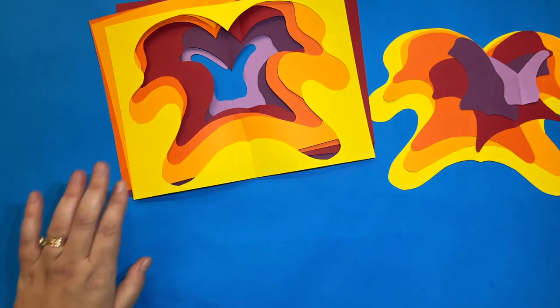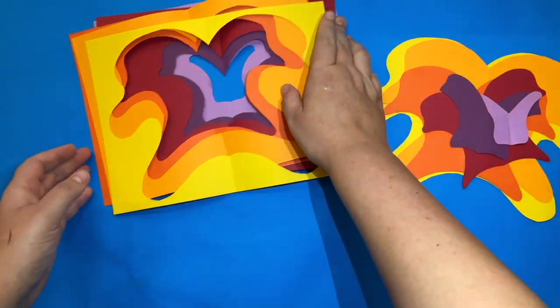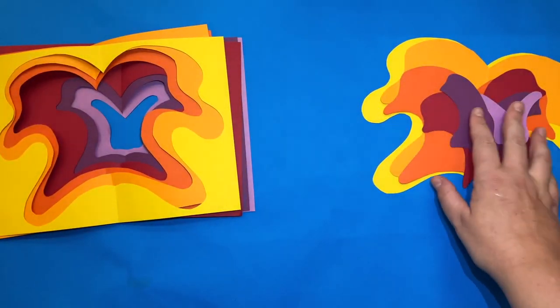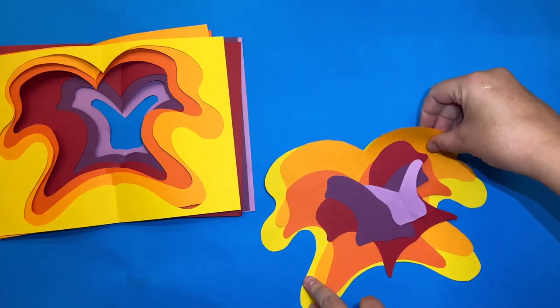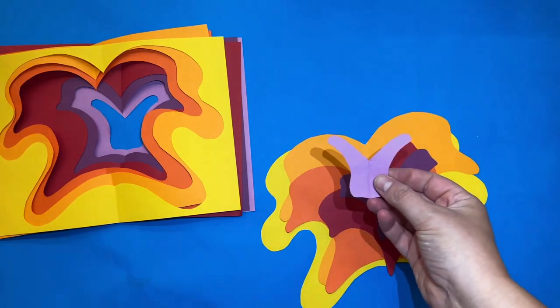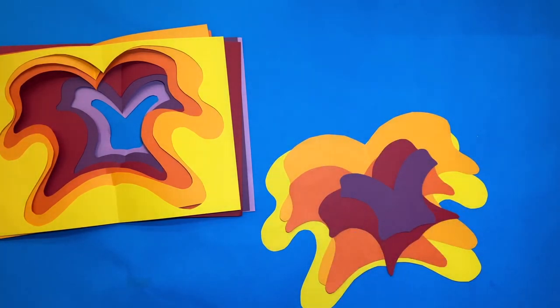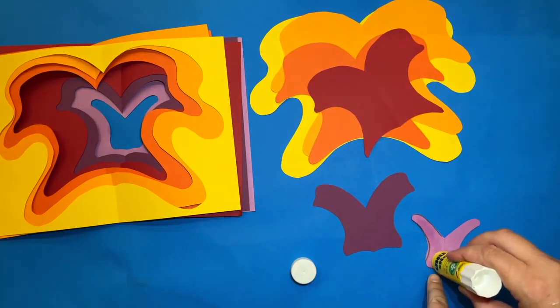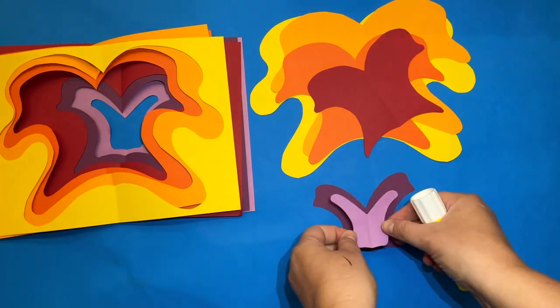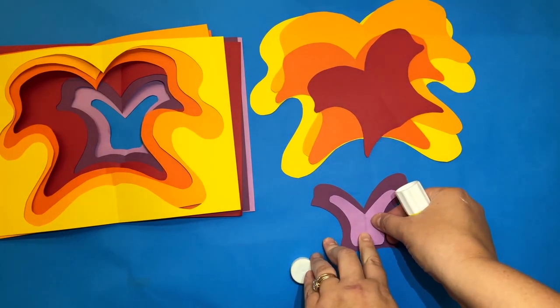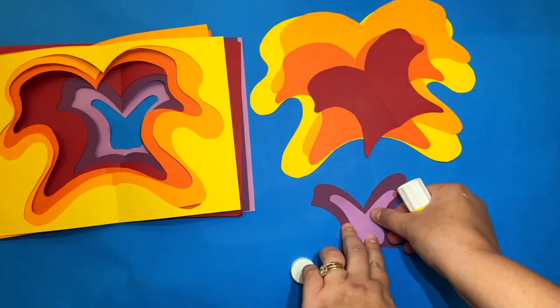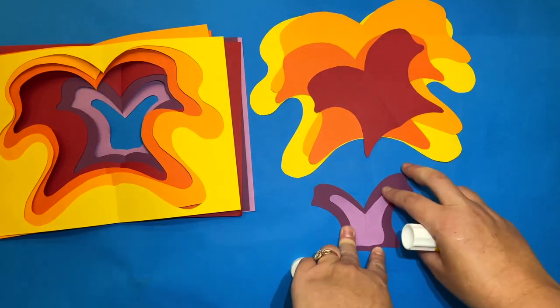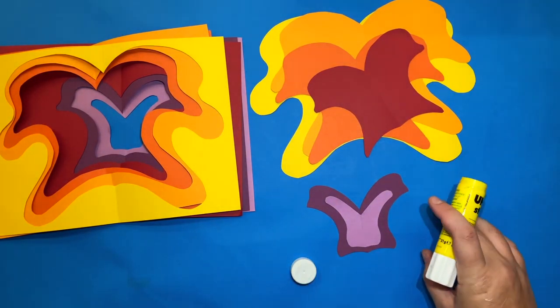Okay now I'm ready to glue my two works of art together. I will start with my positive shapes. For my positive shapes I'm going to start with my smallest piece and a stick glue. Put the glue on the smallest piece first, flip it over and align it so that the line of the folded paper is there in the center and continue.